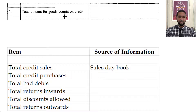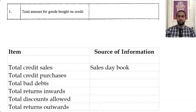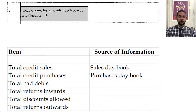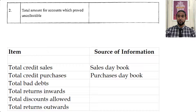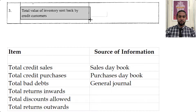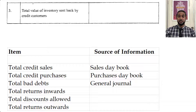The first item to answer: total amount for goods bought on credit — that's credit purchases, which comes from the purchases journal. Next item: total amount for accounts which proved uncollectible — that's bad debts; when you record the writing off of bad debts, you use the general journal. Next: total value of inventory sent back by credit customers — that's returns inwards, and returns inwards comes from the returns inwards journal.